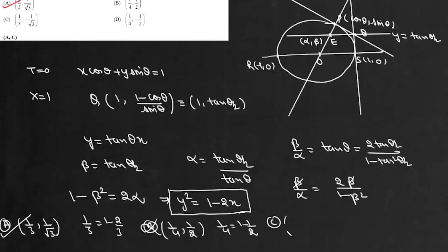Point C is (1/3, -1/√3). So this is 1/3 and 1 - 2/3 which again is true. So option C is correct.